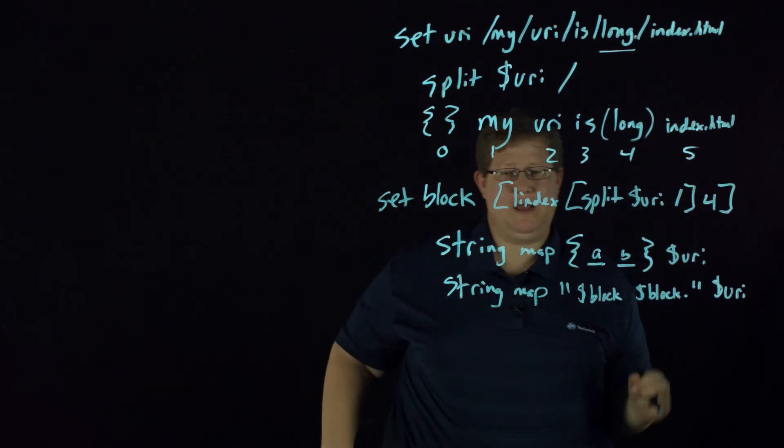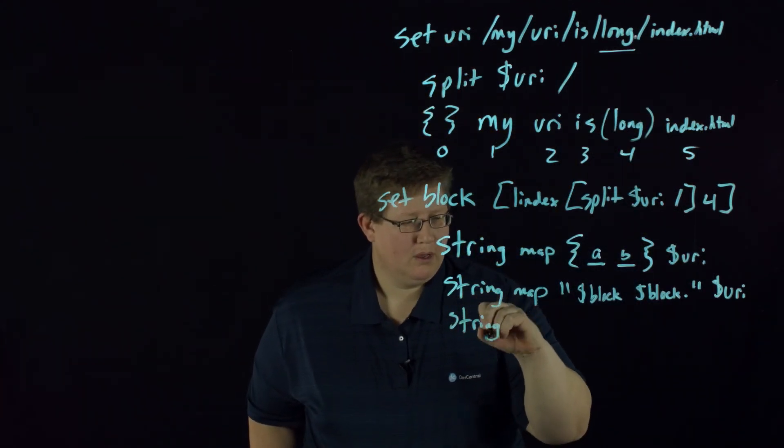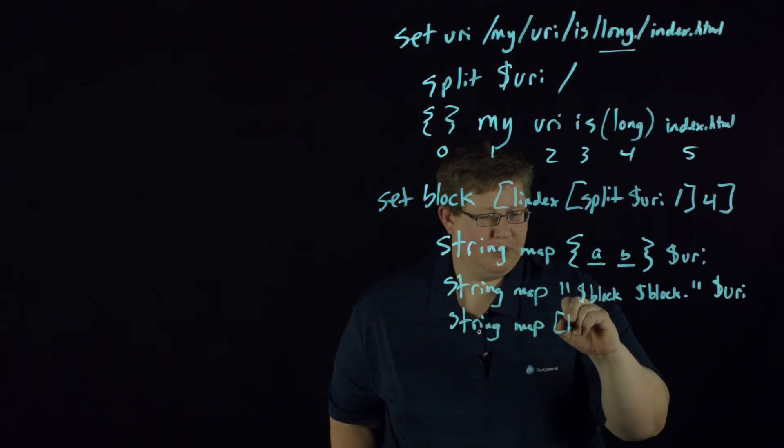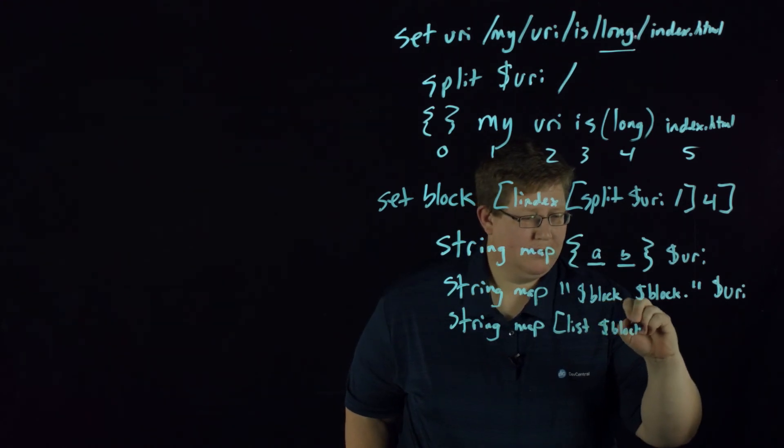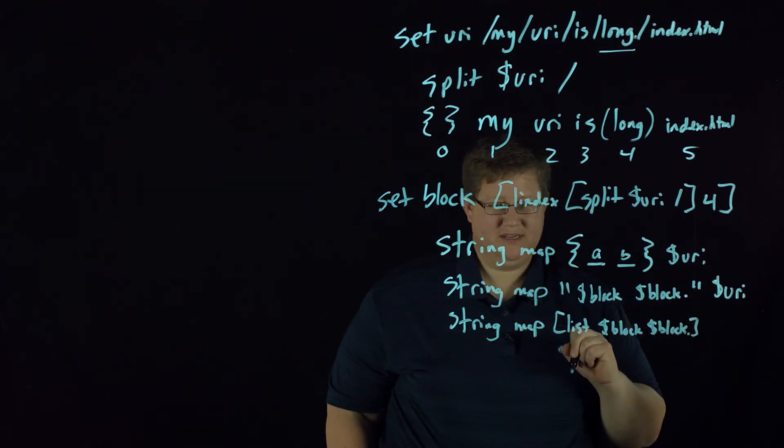Another option is string map, and then we can put a list in here, and then the same thing—block repeated with the dot and the list, and then URI. So both of these options—this is option one, this is option two.